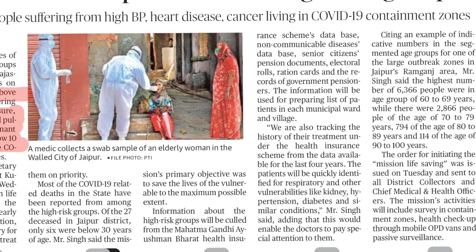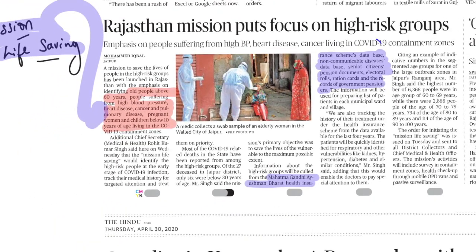And friends, in this particular direction, the data about their information will be taken from the Mahatma Gandhi, Ayushman, Bharat health insurance schemes database. Then non-communicable disease database will be used. Senior citizens pension documents will be utilized. Electoral roles will be seen to ascertain their date of birth. Ration cards and the records of government pensioners will also be seen. And on this basis, the RIP, basically a kind of a database, particularly for the aged people will be made and it will be used.